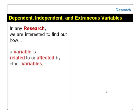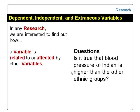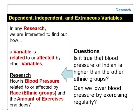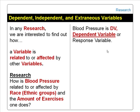In any research, we are interested to find out how one variable is related to or affected by other variables. For example, we may want to answer the question whether the blood pressure of Indians is higher than other ethnic groups. We may also want to answer whether blood pressure can be lowered by exercising regularly. This could lead to research on how blood pressure is related to or affected by race and the amount of exercise one does.